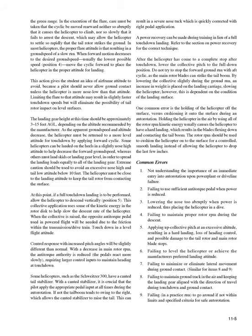As apparent ground speed and altitude decrease, return the helicopter to a more level attitude for touchdown by applying forward cyclic. Extreme caution should be used to avoid an excessive nose-high and tail-low attitude below 10 feet. At this point, if a full touchdown landing is to be performed, allow the helicopter to descend vertically (position 5). Raise collective to use kinetic energy in the rotor disc to help slow the descent rate. When the collective is raised, the opposite anti-torque pedal used in powered flight will be needed due to friction within the transmission/drive train. Touchdown in a level flight attitude. Some helicopters, such as the Schweitzer 300, have a canted tail stabilizer — it is crucial that the pilot apply appropriate pedal input at all times, or the tail boom tends to swing right, raising the tail, which can result in a severe nose tuck.